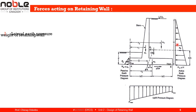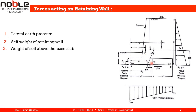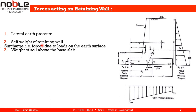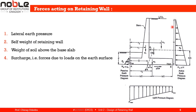Another force is the self-weight of the retaining wall — the self-weight of the stem (W1) and the self-weight of the heel and toe slab (W2). The third force is the weight of soil above the base slab (W3), which acts in the gravity direction. The fourth force is surcharge — the force due to loads on the earth surface or due to an inclined soil surface, which must also be accounted for.